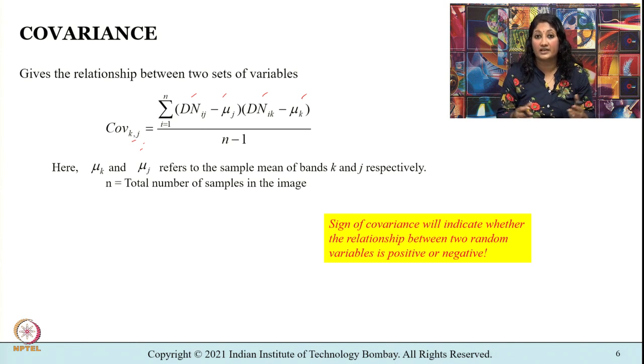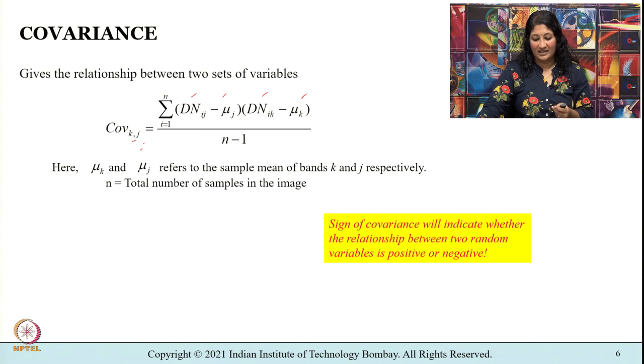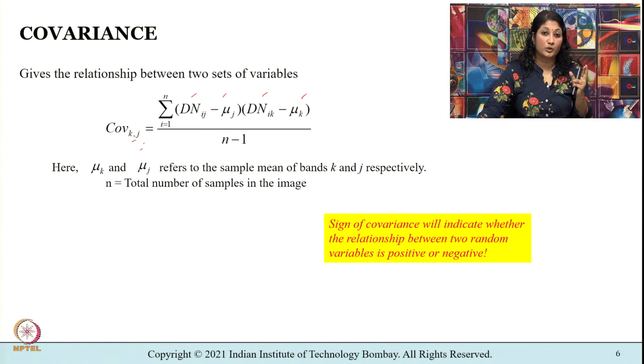We understood that the parallel piped classifier has a disadvantage: it does not perform well when the set of data points has high covariance. We then understood how to compute covariance between two random variables. One important point: the sign of covariance, whether positive or negative, indicates whether the relationship between two random variables is positive or negative. We are learning about covariance because we need to understand one supervised classification method that uses mean and covariance to classify pixels to clusters.